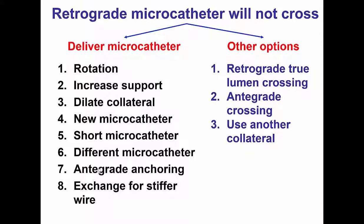If there is an antegrade wire in the subintimal space overlapping the retrograde wire, one can do anchoring of the retrograde guide wire to advance the retrograde microcatheter. Alternatively, if the microcatheter is fairly close to the main vessel, one could remove the initial guide wire and exchange for a stiffer wire such as a Pilot 200 that can provide more support.